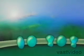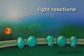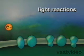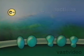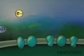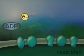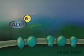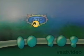During the light reactions, the energy of sunlight excites electrons in chlorophyll molecules to a higher energy state. The electrons then give up energy, making it possible to convert molecules of ADP into molecules of ATP.